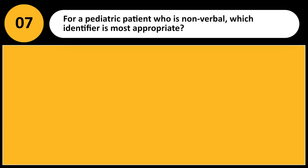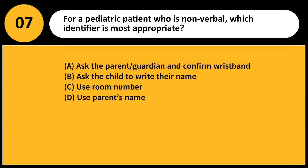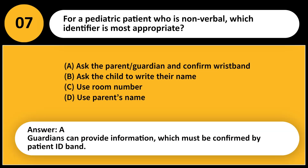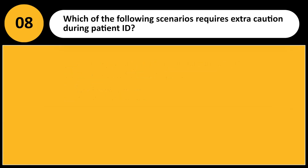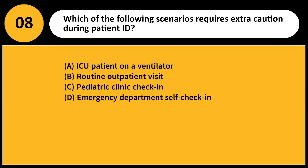For a pediatric patient who is nonverbal, which identifier is most appropriate? A. Ask the parent or guardian and confirm wristband. B. Ask the child to write their name. C. Use room number. D. Use parent's name. Answer: A. Guardians can provide information, which must be confirmed by patient ID band.